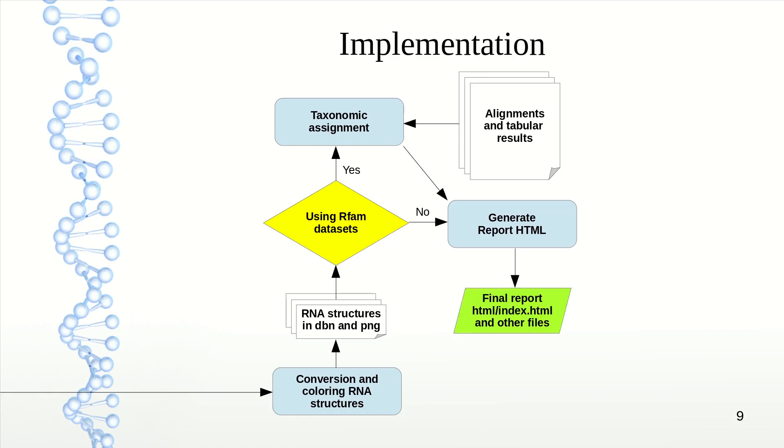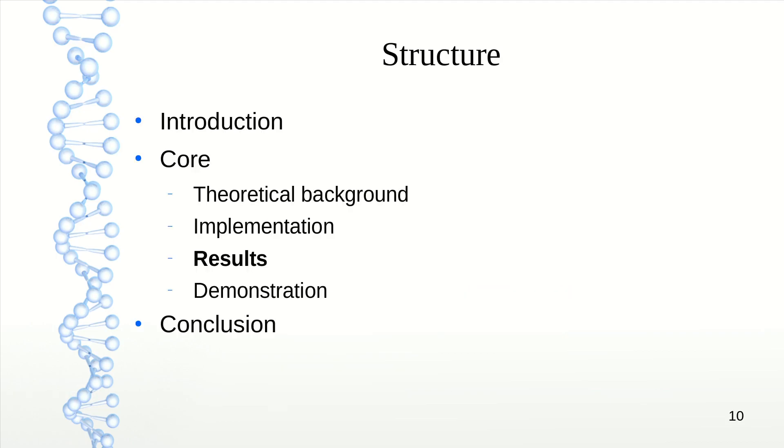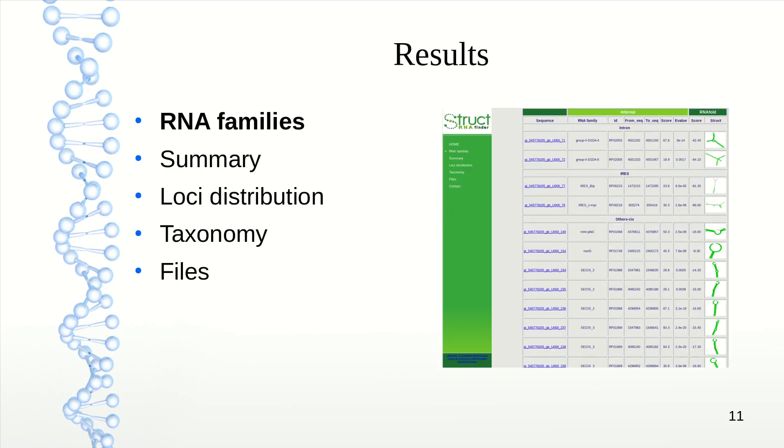Finally, we have our final report, which will be an HTML file that is easy to view and read. What does this result look like? The RNA families section shows all the sequences found, allocating each a unique name, the RNA family they belong to, and the family ID.